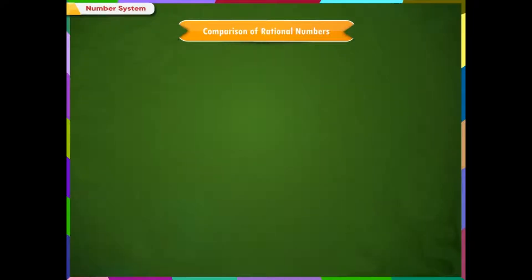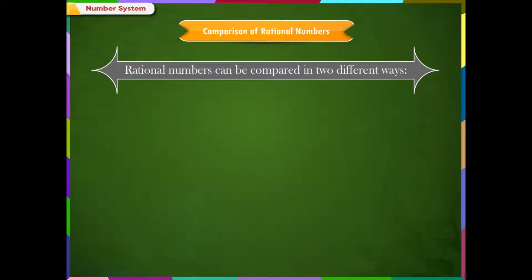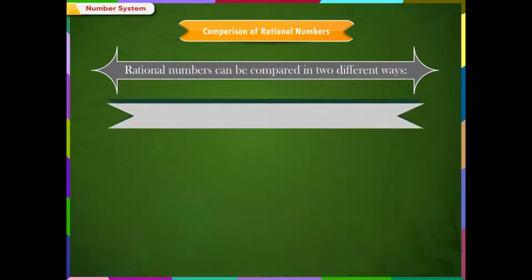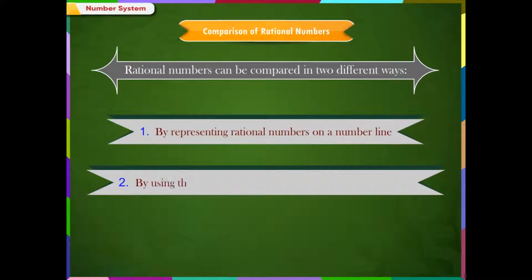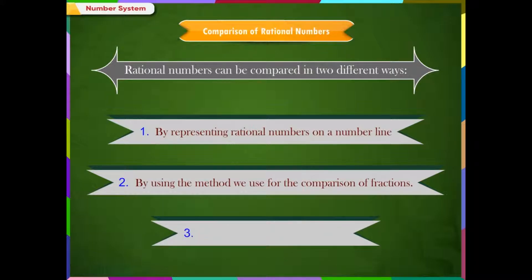Comparison of Rational Numbers. Rational numbers can be compared in two different ways: first, by representing rational numbers on a number line; second, by using the method we use for the comparison of fractions; and third, by cross multiplication method.